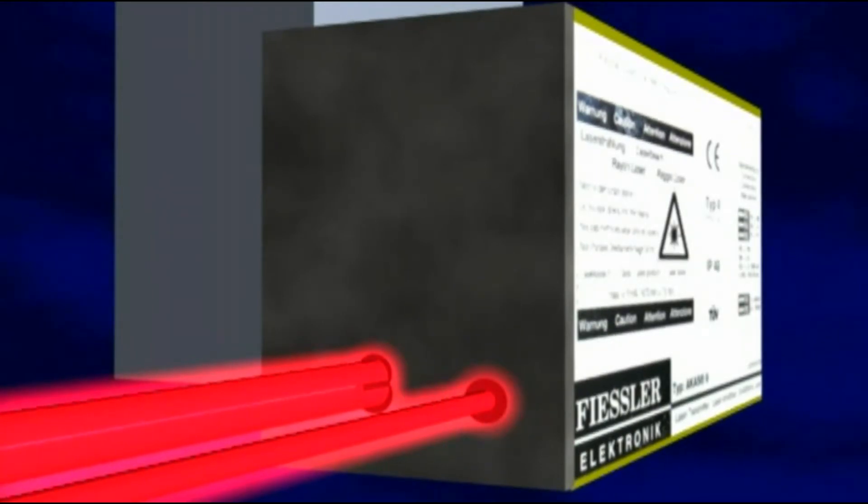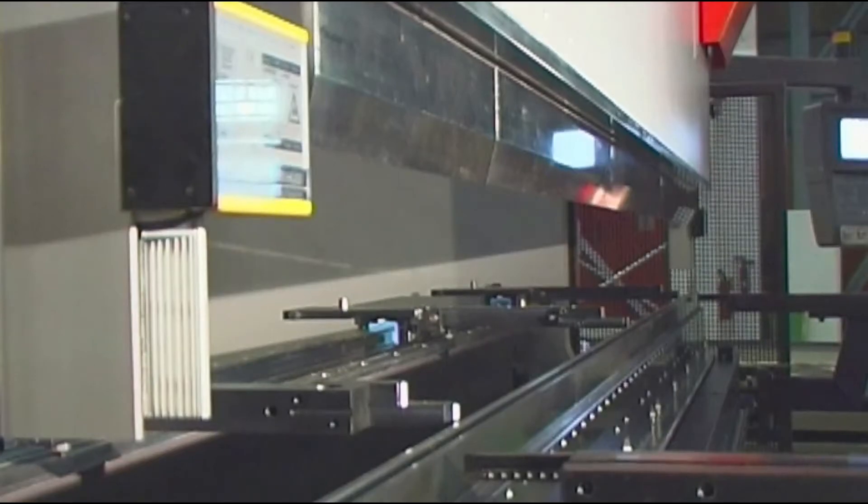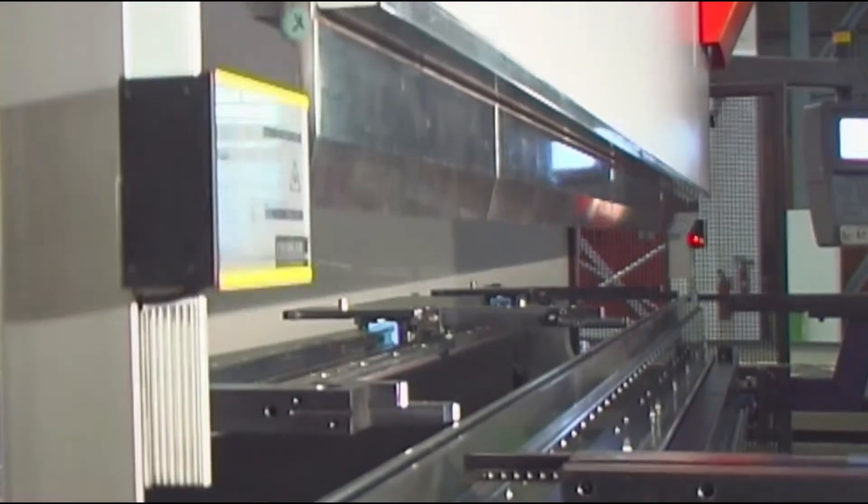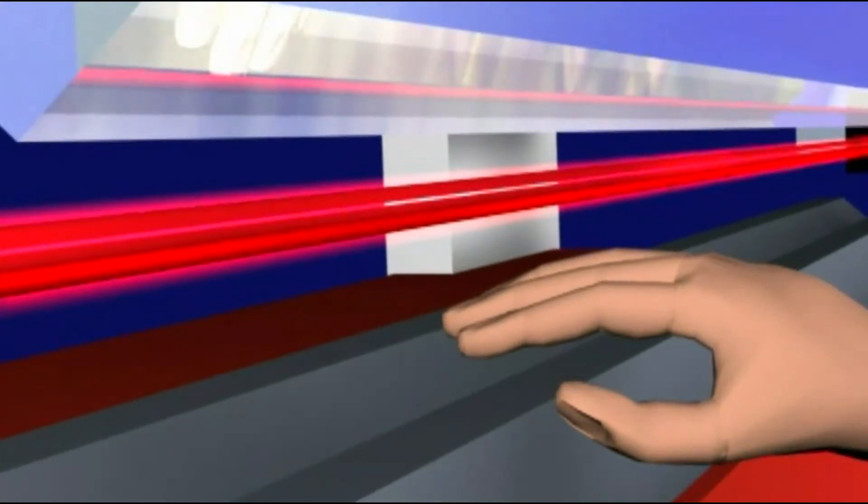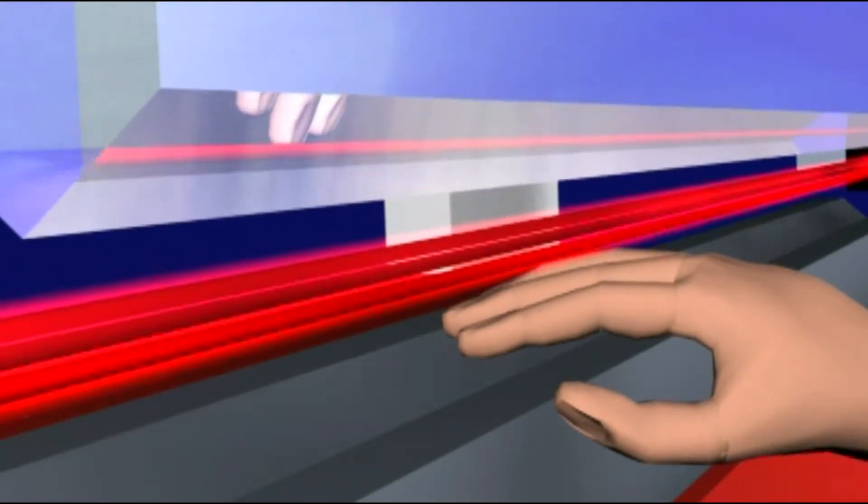During the actual bending process, the punch moves down at high speed, that is at full speed, until the tip of the tool is positioned immediately above the metal sheet. The presence of a finger or hand in the danger area would be detected by the laser grid and stop the machine.